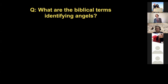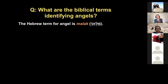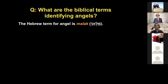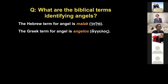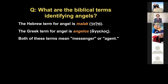Let's look at the biblical terms that identify angels. The Hebrew term for angel is malak. This is the same Hebrew word you see in the book Malachi — malaki means 'my angel' or 'my messenger.' Malachi was not an angel; he was a human. The Hebrew term malak doesn't technically mean an invisible spirit being; it simply means an agent or a messenger. The same is true for the Greek term for angel, angelos. Both terms mean a messenger or an agent.